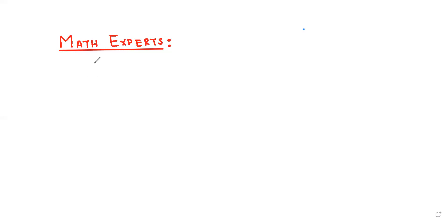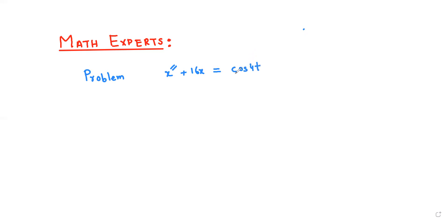One of our students asked to solve this problem: x double prime plus 16x is equal to cos(4t), with initial conditions x(0) = 0 and x'(0) = 1.